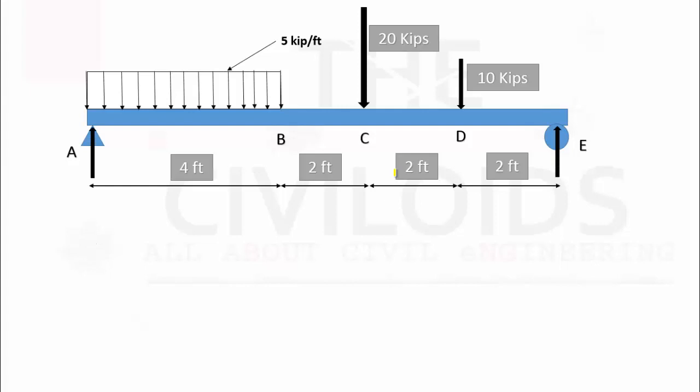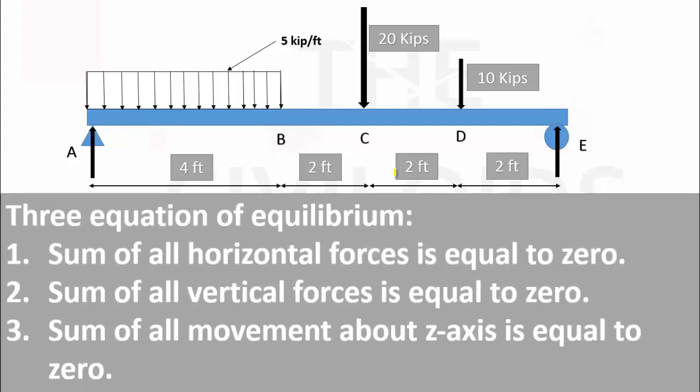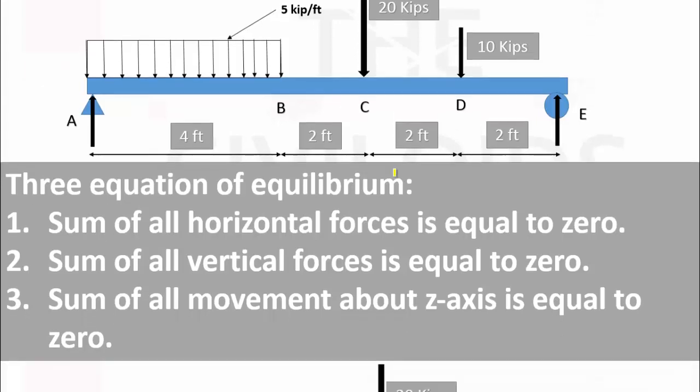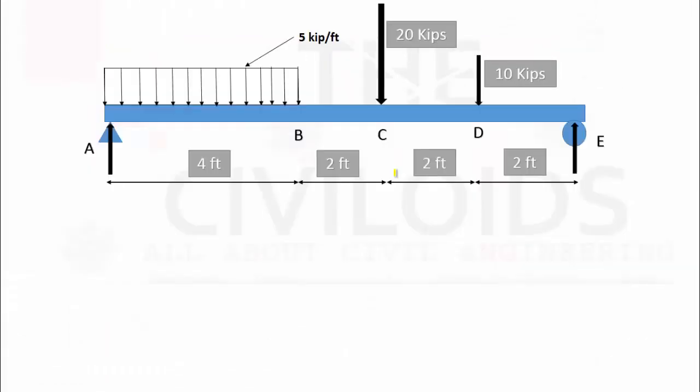We already know that in a simply supported beam we have one vertical reaction at each support. To find these vertical reactions we will use the three equations of equilibrium: the sum of all horizontal forces equals zero, the sum of all vertical forces equals zero, and the sum of all moments about the z-axis equals zero. To find support reactions A and E, we will start with the third equation of equilibrium.